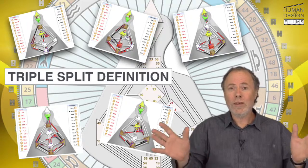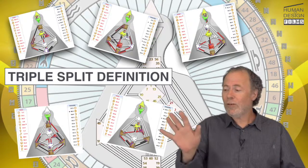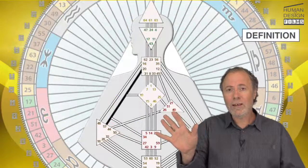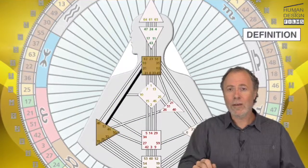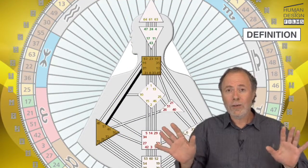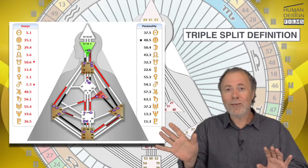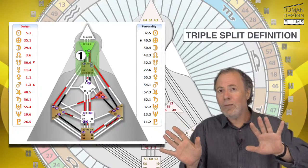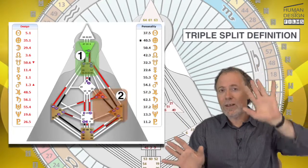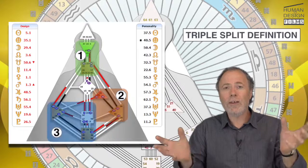Well, we know that the definition is a matter of centres being linked together by channels. So, in terms of the triple-split, there are centres being linked together by channels in three completely separate autonomous sides of you.